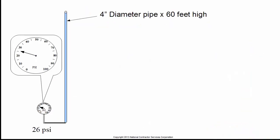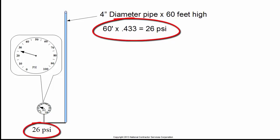Just to reinforce the pounds per square inch illustration, calculate the psi at the bottom of a 4 inch diameter pipe that is 60 feet high. Multiply the height, 60 feet, by 0.433 and the psi is 26.